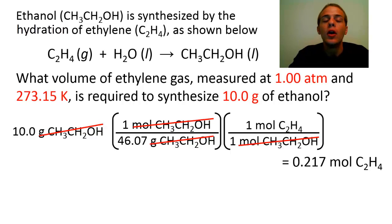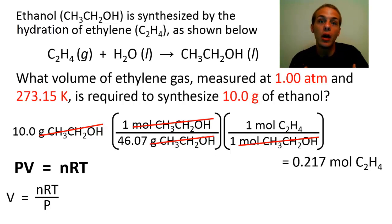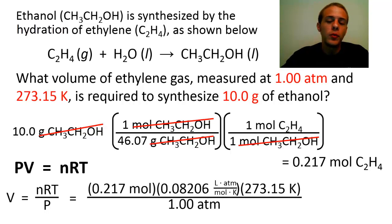Now that we have moles of ethylene gas, we can use the ideal gas law equation and see if we can't solve for the volume that way, because again, the problem is asking what volume of ethylene gas. So remember, the ideal gas law, that's PV equals nRT. We can solve for V by simply dividing both sides of this equation by P. That's going to give us that the volume equals nRT over P, and now we simply have to just plug all of those values in, and we will get the volume of ethylene gas that we need. So the amount in moles, we just figured that out. That's 0.217 moles. We're going to multiply that by R. That's the ideal gas constant, 0.08206 liters atmospheres over moles kelvins.